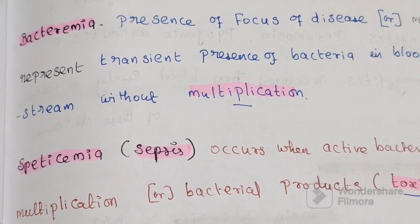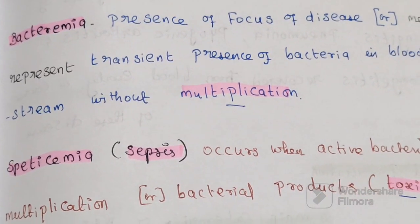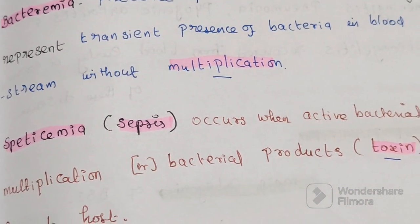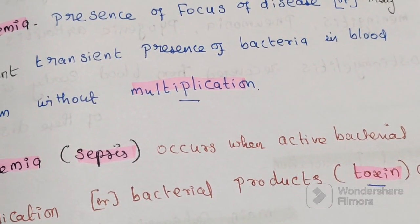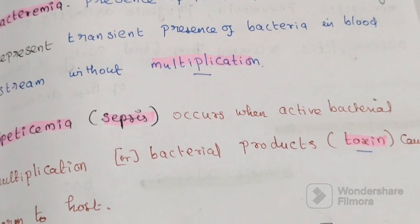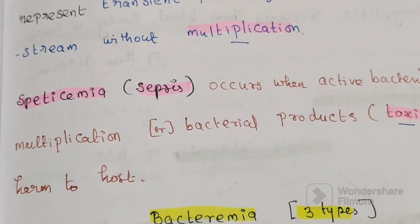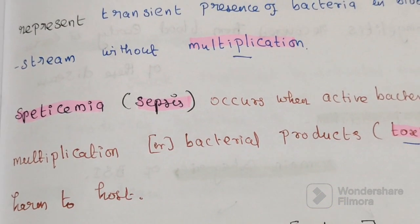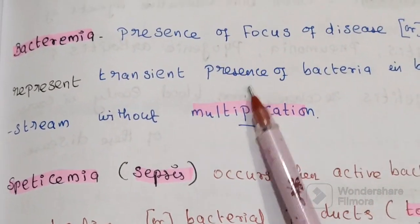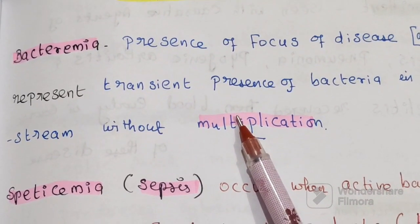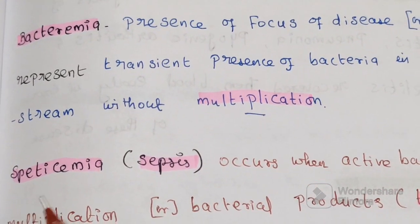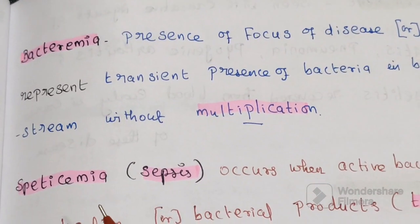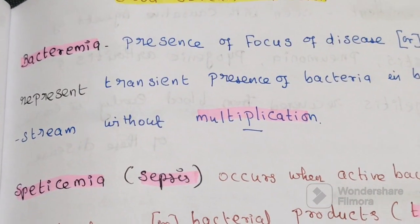Next, septicemia, also called sepsis. Sepsis occurs when active bacterial multiplication or a bacterial product such as a toxin causes harm to the host cell. So when there is multiplication and toxin production, the condition is called septicemia. Without multiplication, the condition is called bacteremia.